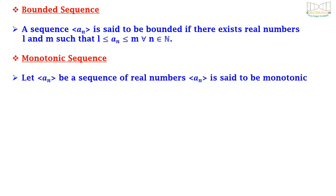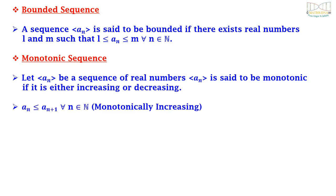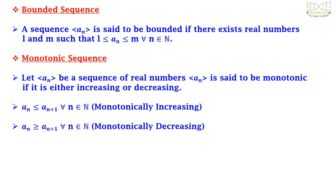Monotonic sequence: let {a_n} be a sequence of real numbers. Then {a_n} is said to be monotonic if it is either increasing or decreasing. If a_n ≤ a_{n+1} for all n belonging to N, then it is a monotonically increasing sequence. If a_n ≥ a_{n+1} for all n belonging to N, then it is a monotonically decreasing sequence.